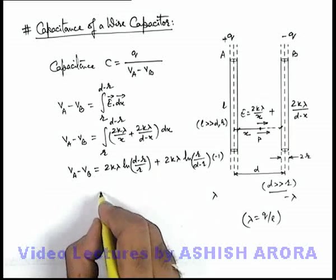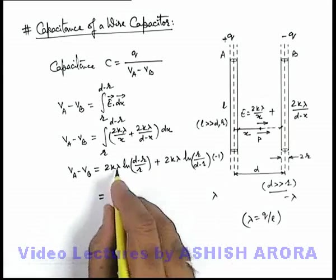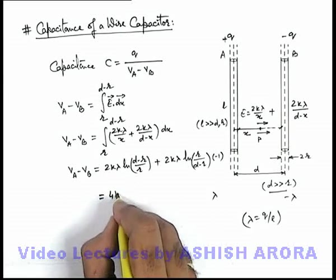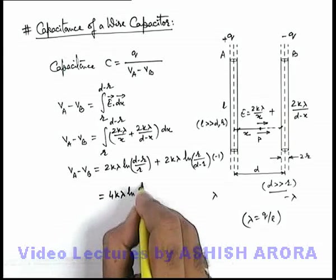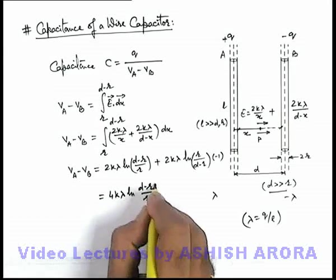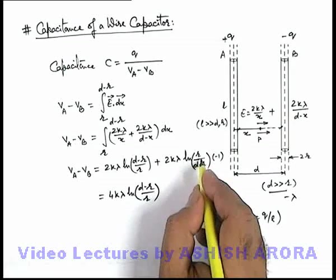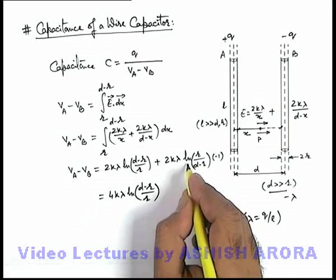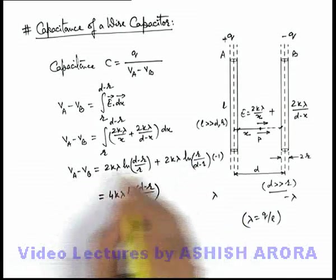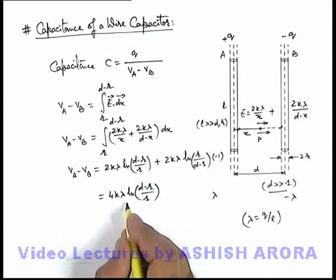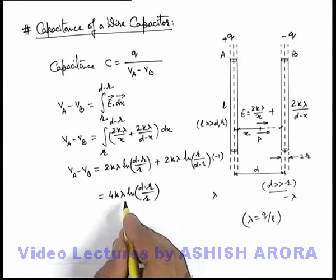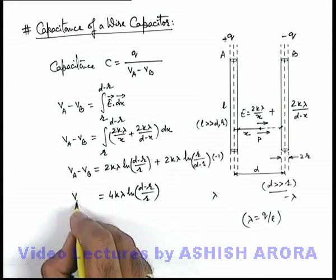Then in this situation on simplifying this result you can see we're getting it 4k lambda ln of d minus r by r. With this negative sign we can take the reciprocal of the argument of this natural log, and then we can see both the terms are identical that will be added up. Now in this situation if it is V_A minus V_B.